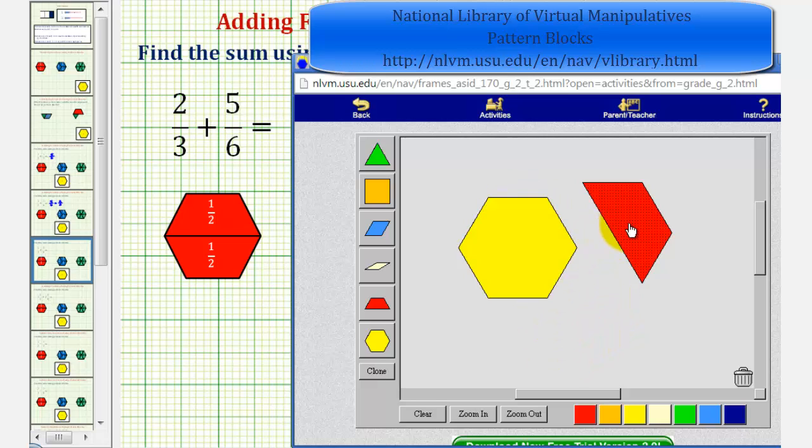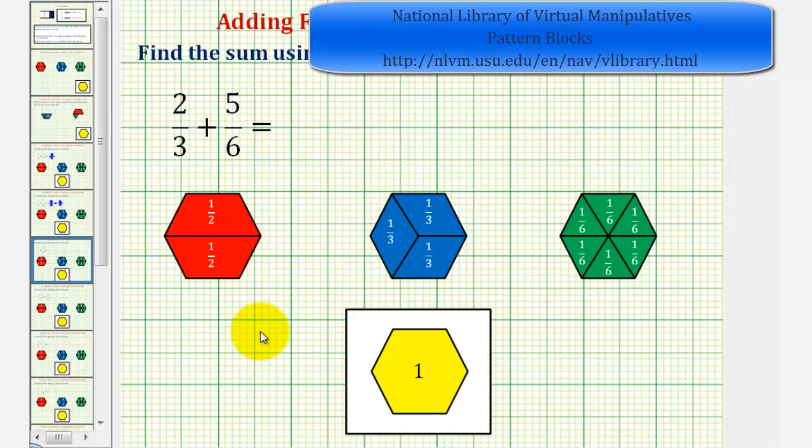Which means our sum would be one plus one-half, or one-and-a-half. So two-thirds plus five-sixths equals one-and-a-half.